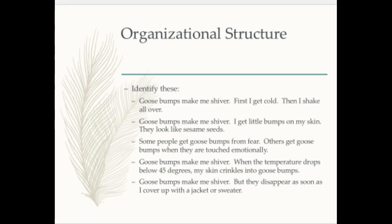If you look at these, can you identify the organizational structure? 'Goosebumps make me shiver. First I get cold, then I shake all over.' 'Goosebumps make me shiver. I get little bumps on my skin. They look like sesame seeds.' 'Some people get goosebumps from fear. Others get goosebumps when they are touched emotionally.' 'Goosebumps make me shiver. When the temperature drops below 45 degrees, my skin crinkles into goosebumps.' Last one: 'Goosebumps make me shiver, but they disappear as soon as I cover up with a jacket or sweater.' Now you can see a little bit why it's so difficult to teach these structures — even as adults, we're not used to looking for the structure.